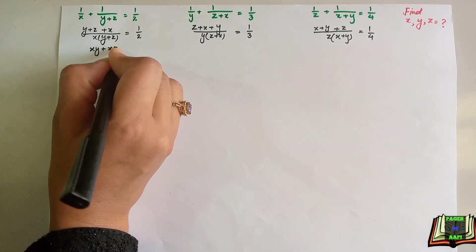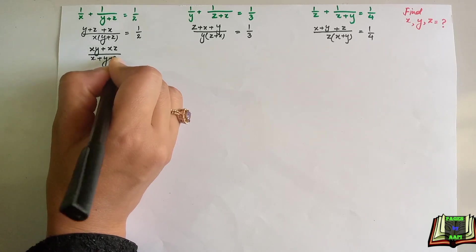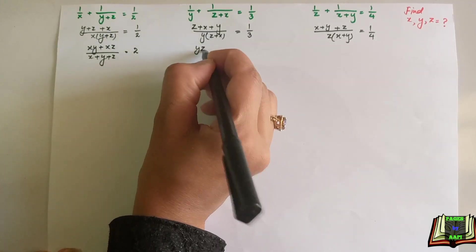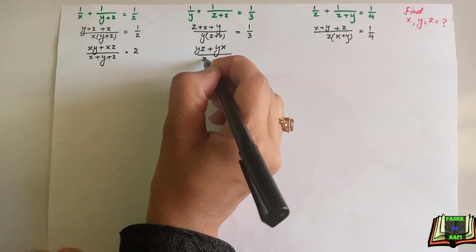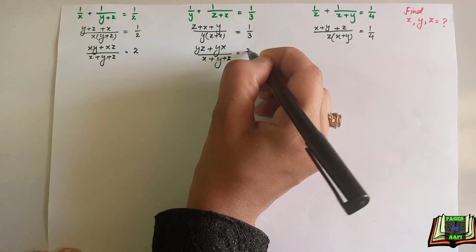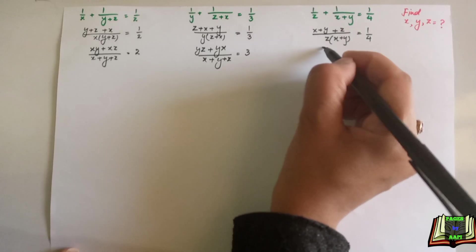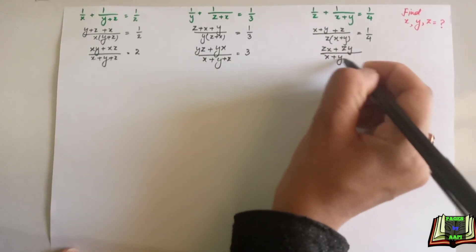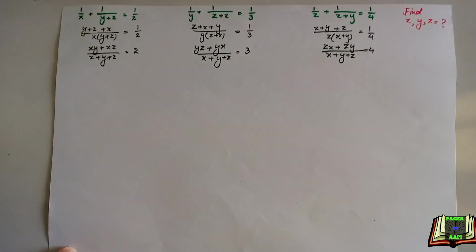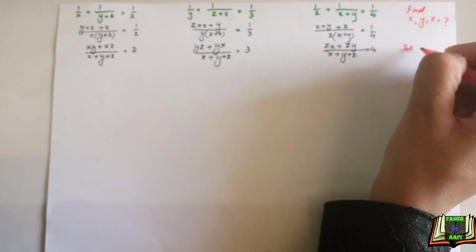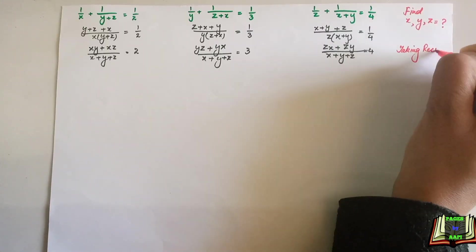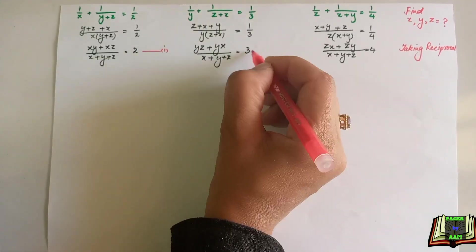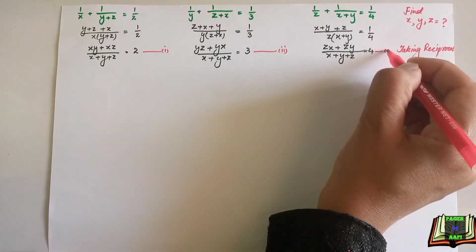Now we multiply the denominator and take the reciprocal. Rearranging: (xy+xz) divided by (x+y+z) equals 2 for equation 1; (yz+yx) divided by (x+y+z) equals 3 for equation 2; (zx+zy) divided by (x+y+z) equals 4 for equation 3. Let's name these equation 1, equation 2, and equation 3.